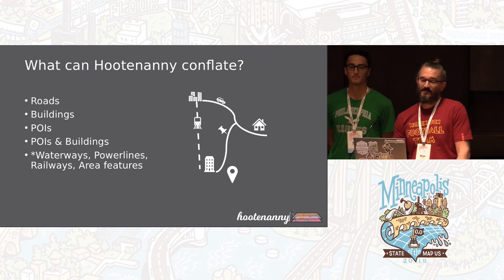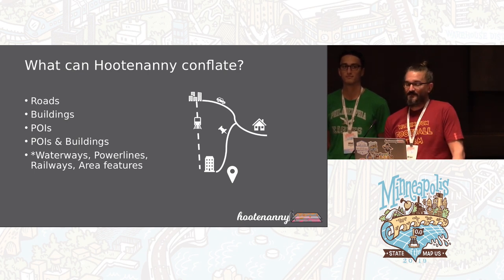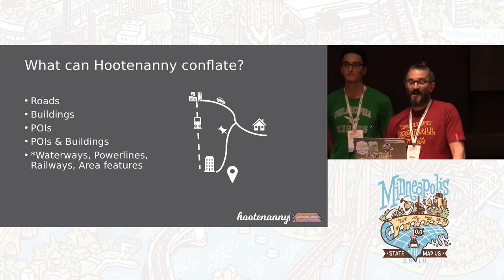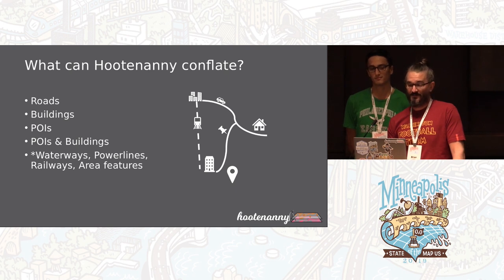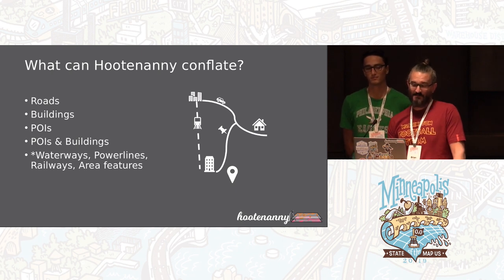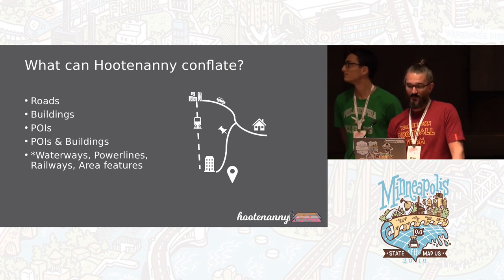What can Hootenanny conflate? When we started, over 80% of OSM data consisted of features tagged as roads, buildings, or points of interest, so we chose those as the first features to support. Since then, we've made attempts to conflate other features such as power lines, waterways, railways, and general area features.